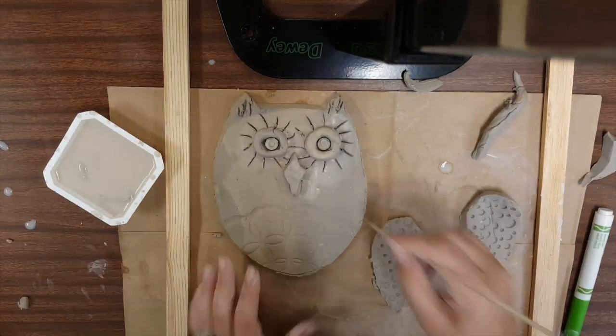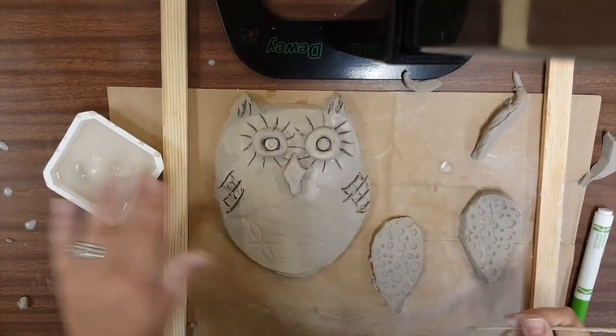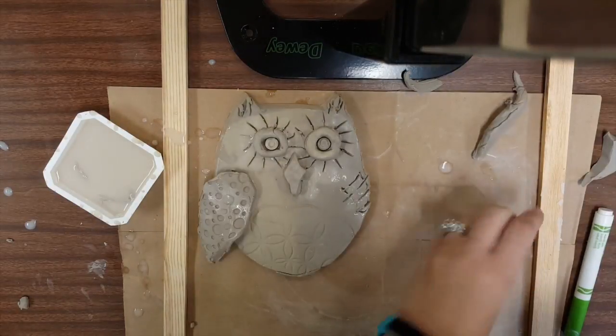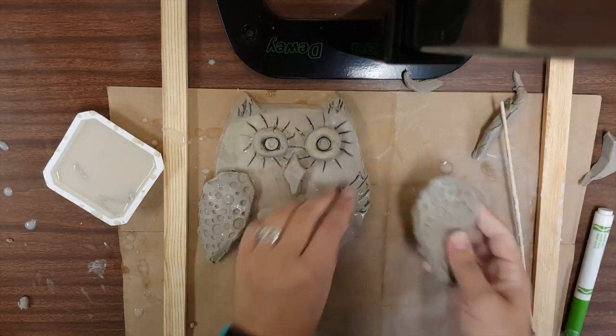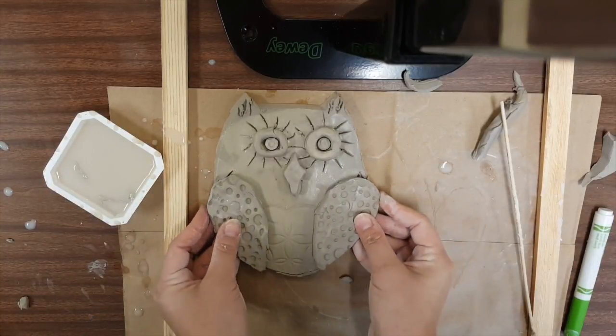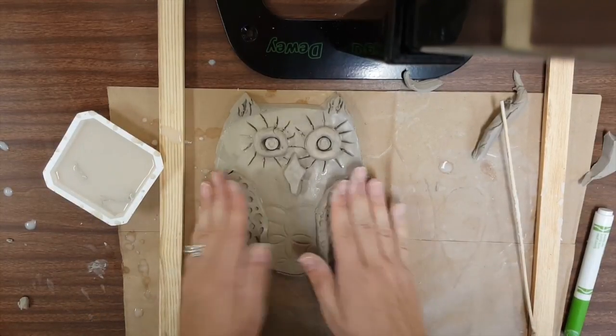And I'm going to need to follow those same steps again: scratching, adding the slip. Scratch and score the back of those wings real quick, then pressing them on. The wings could be out or they could be tucked in - it's up to you. I'm going to tuck mine in.